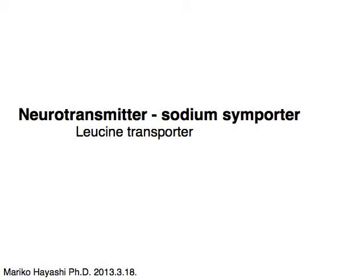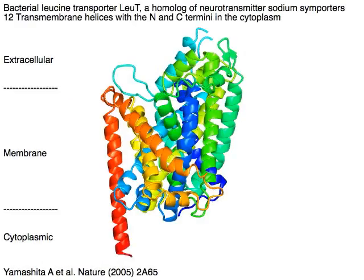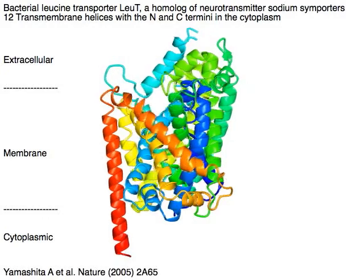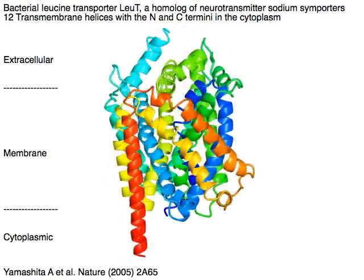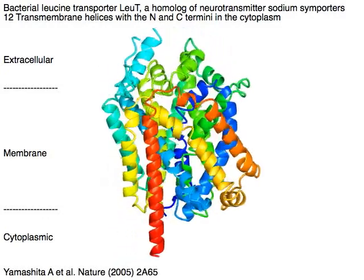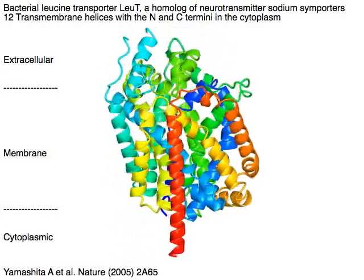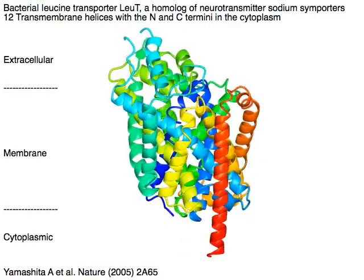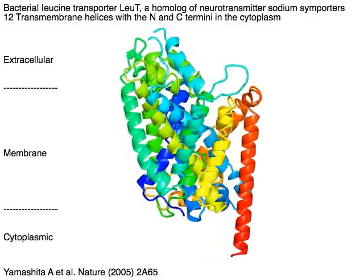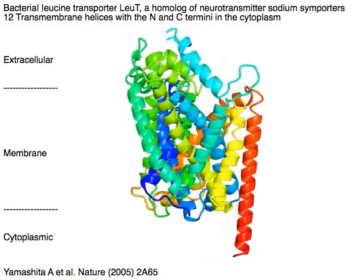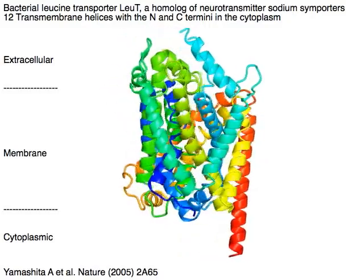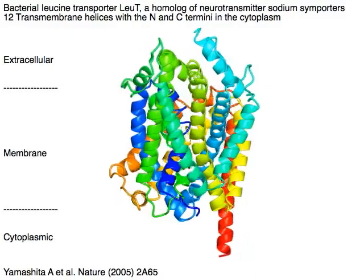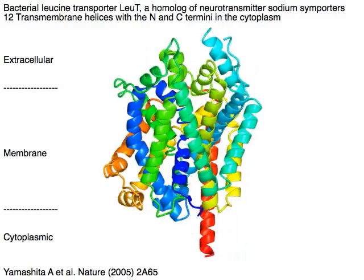Neurotransmitter sodium symporter, or NSS, LeuT transporter. Bacterial leucine transporter LeuT is a bacterial homologue of neurotransmitter sodium symporters. LeuT has 12 transmembrane helices with both the N and C termini in the cytoplasm.